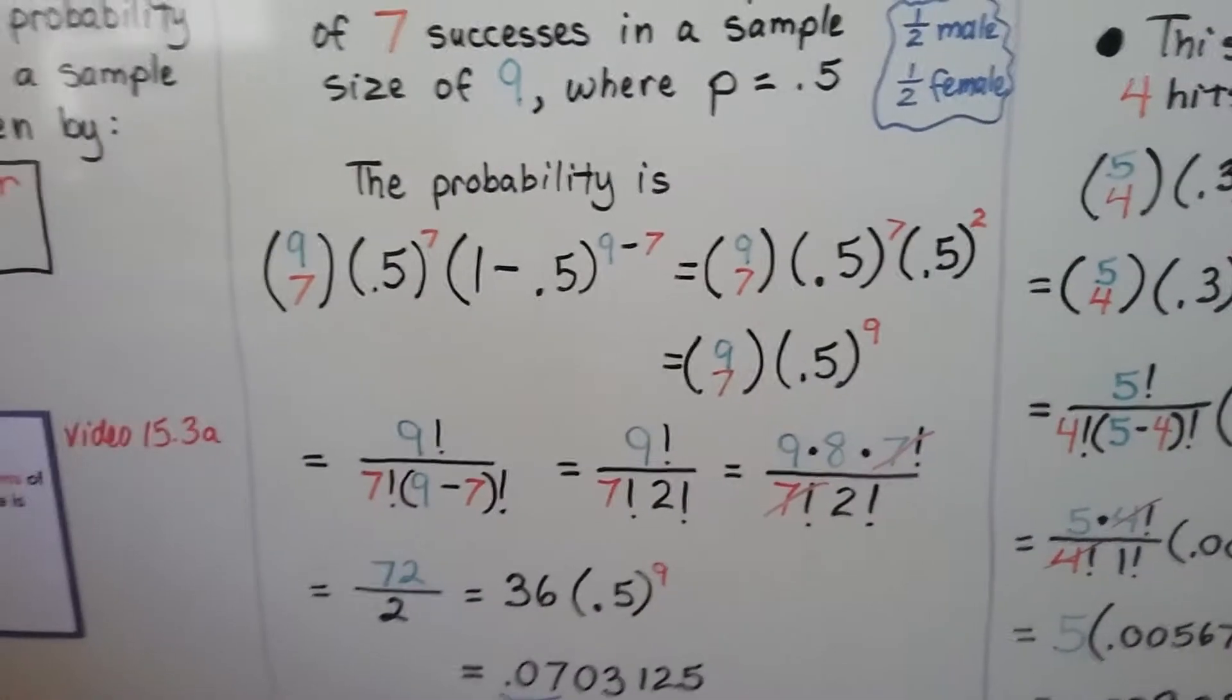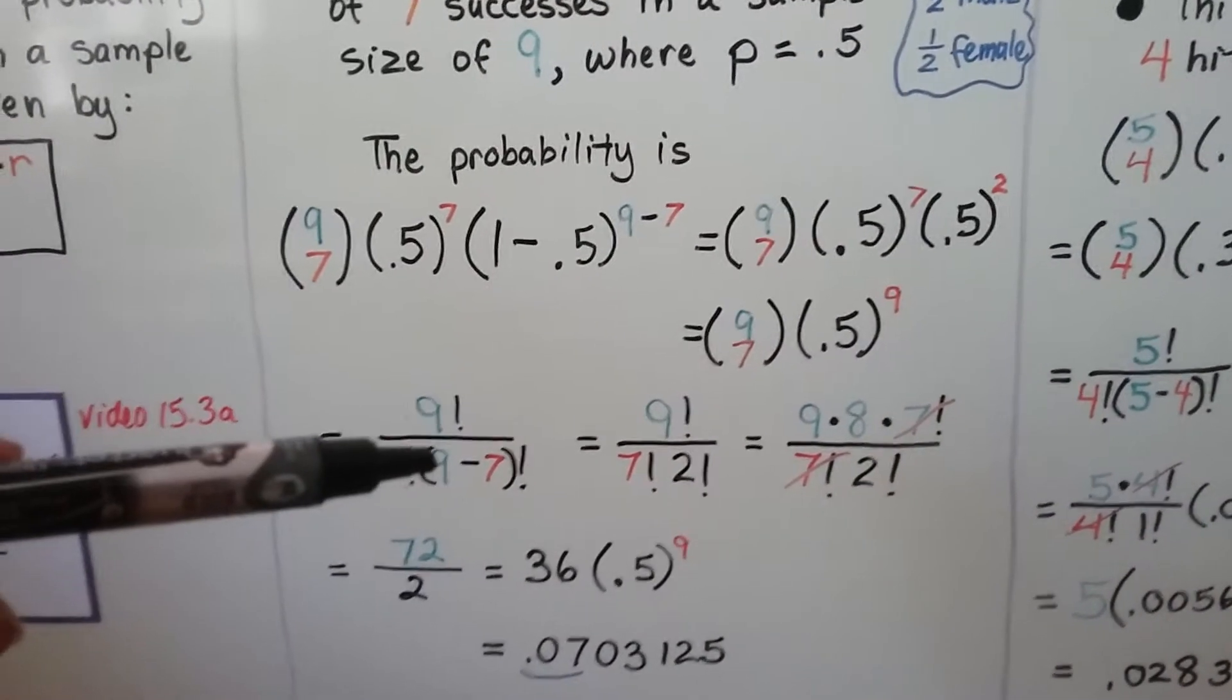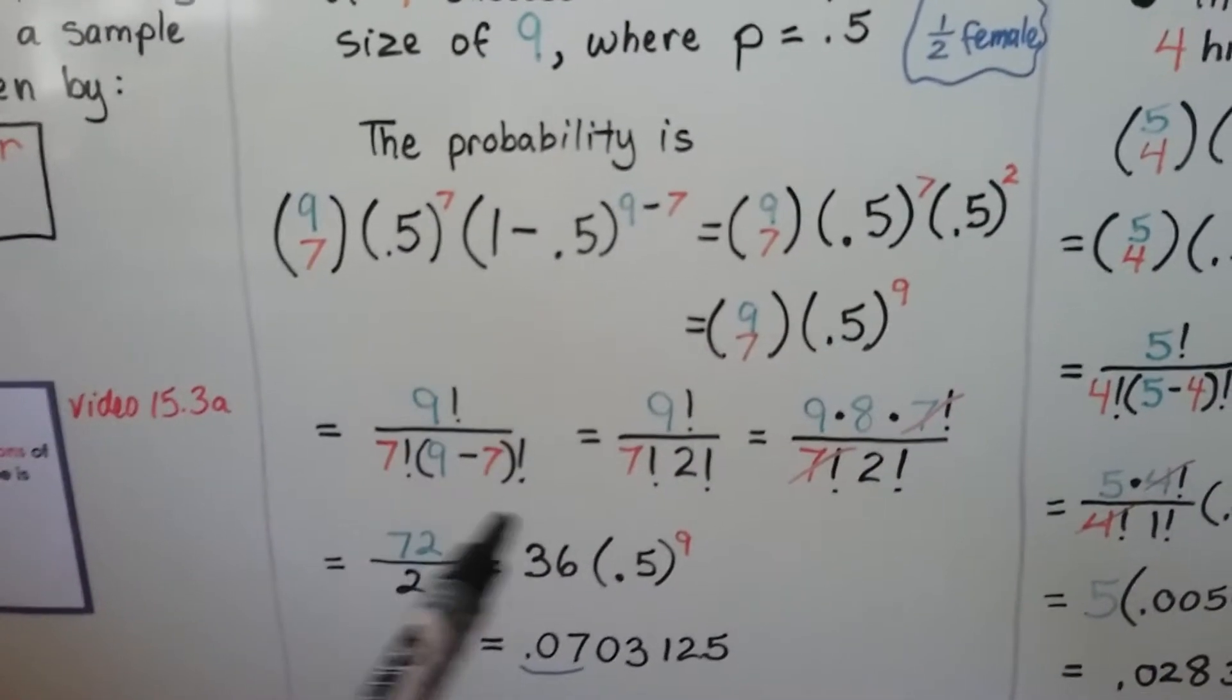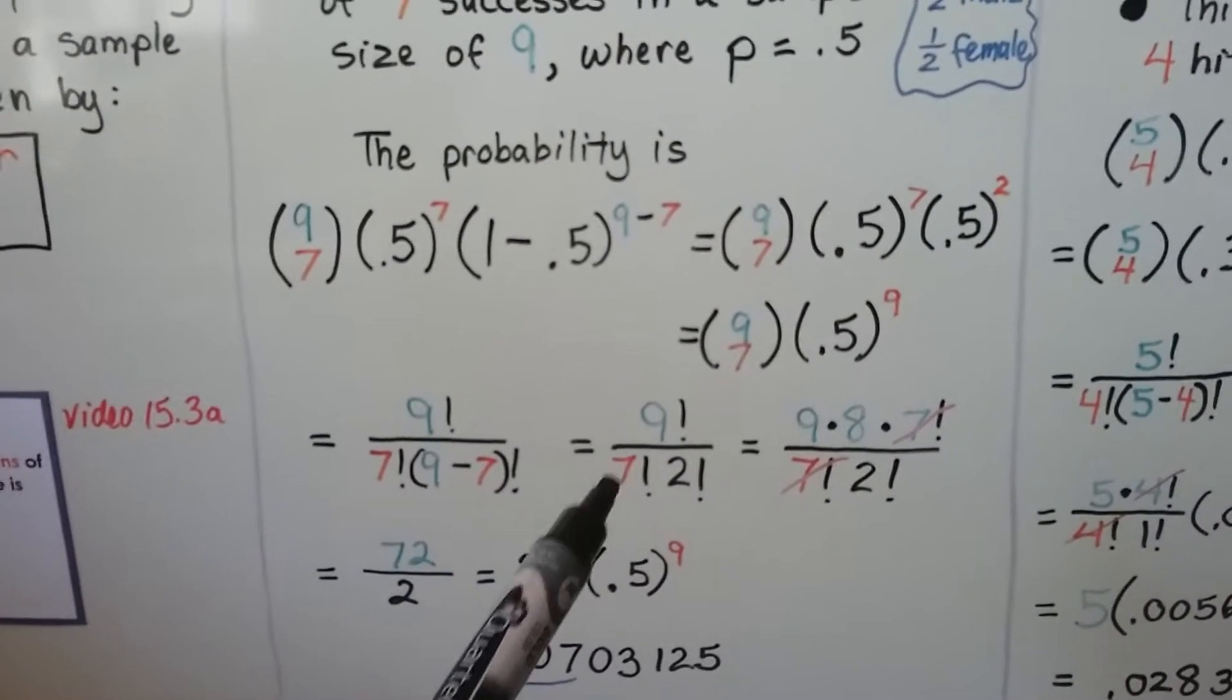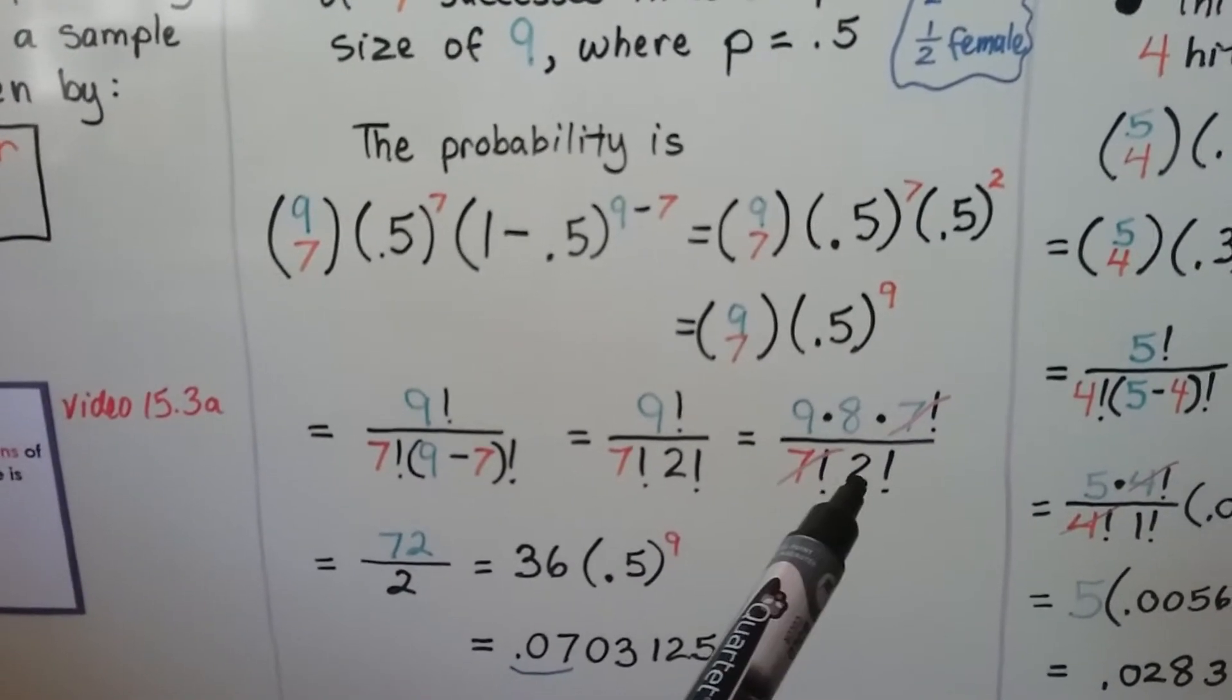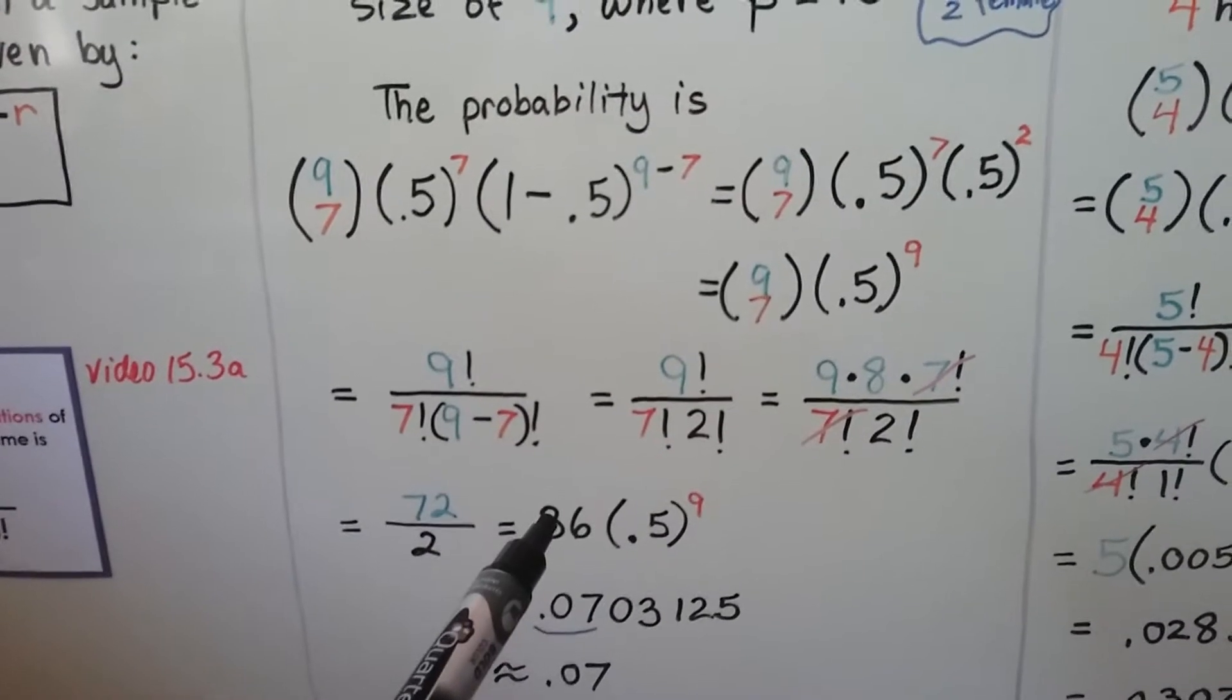The nine choose seven is nine factorial over seven factorial times two factorial. We can write the nine factorial with a factor of seven factorial and cancel them out. So we end up with nine times eight over two. That's 72 over two, which equals 36.